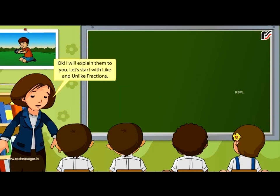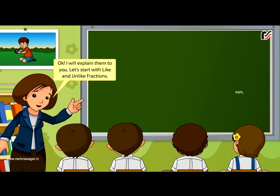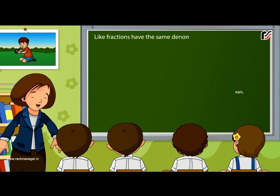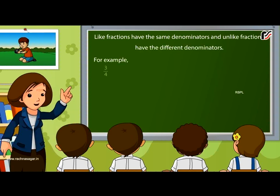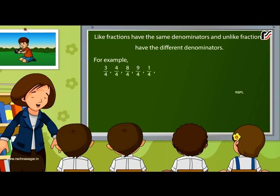Let's start with like and unlike fractions. Like fractions have the same denominators and unlike fractions have different denominators. For example, 3 by 4, 4 by 4, 8 by 4, 9 by 4, 1 by 4, etc. are like fractions.